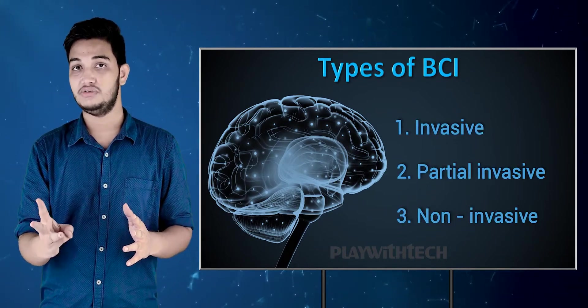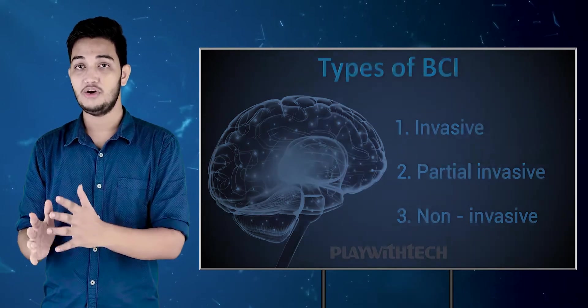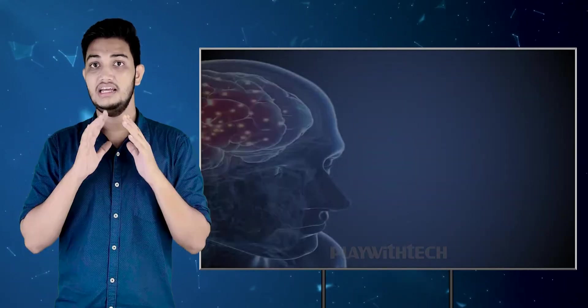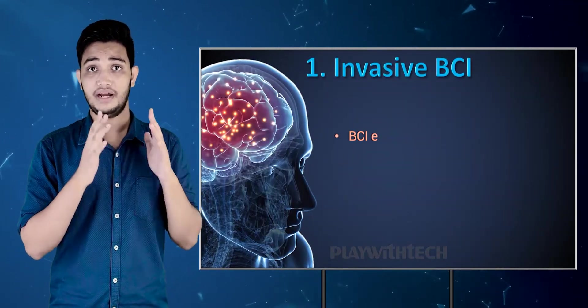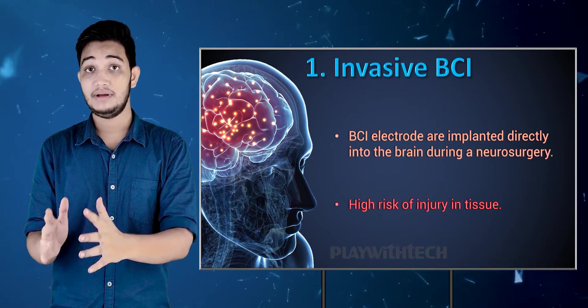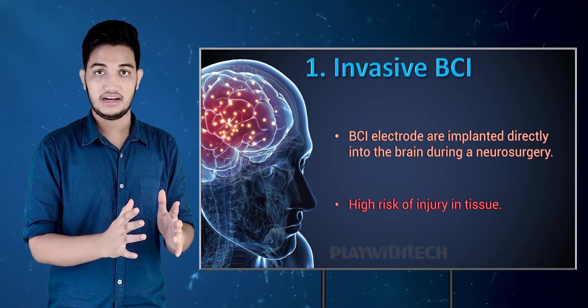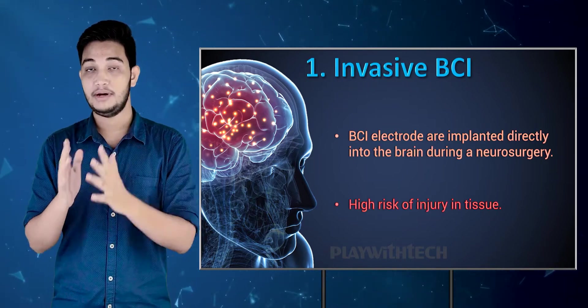In BCI there are three types: invasive, non-invasive, and partial invasive. Let's begin with invasive brain-computer interface. Invasive means injury — meaning you have to perform surgery on your brain, open your scalp, and fit an electrode directly in your brain.